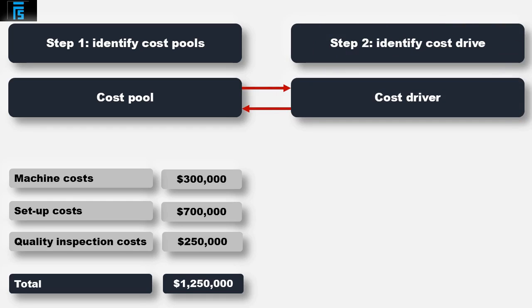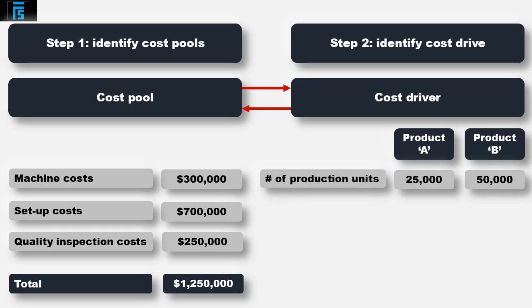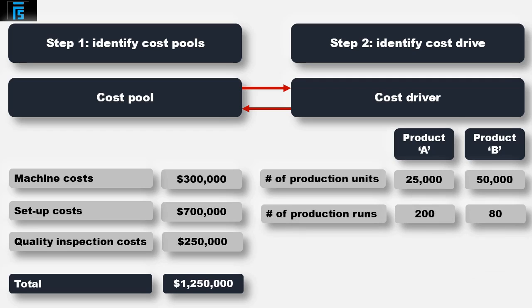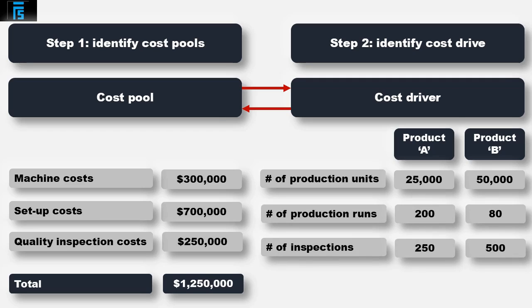Step 2 is to identify the cost driver for each cost pool — we need to determine what is driving each of the three overhead types. The cost drivers are typically given in any activity based costing scenario and it is the job of the student to link the cost driver to the cost pool. Machine costs are driven by machine time or the number of machine hours. Set-up costs are determined by the number of production runs, while quality inspection costs are driven by the number of inspections carried out.